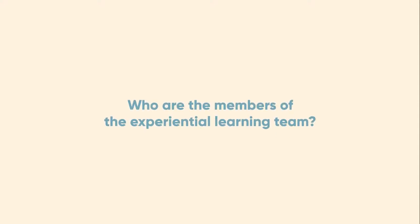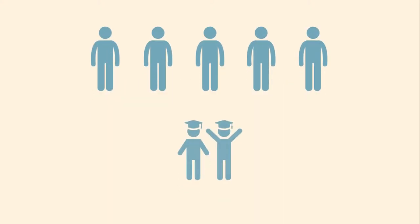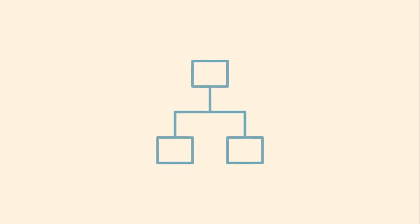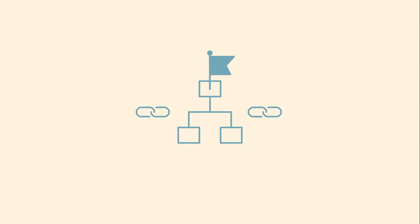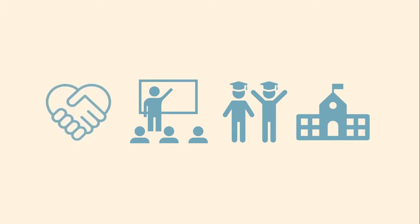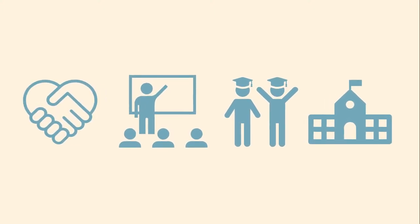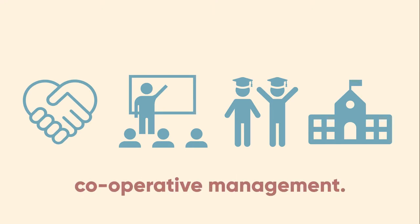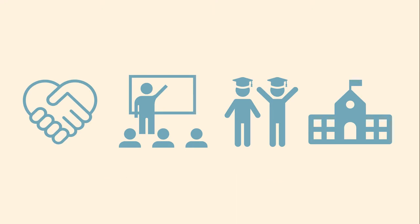Who are the members of the Experiential Learning Team? A team of invested individuals supports successful student outcomes in experiential learning at the post-secondary level. EL activities are intentional and structured, requiring a common understanding and goal within the context of both classroom and community. We can identify our main contributors as the student, the course director or instructor, the institution, and the community or industry partner. This multifaceted team enables student learning and provides accountability for everyone within their individual settings through commitment, collaboration, and cooperative management of their respective roles and responsibilities within the EL framework.